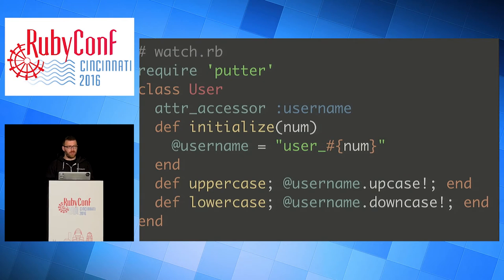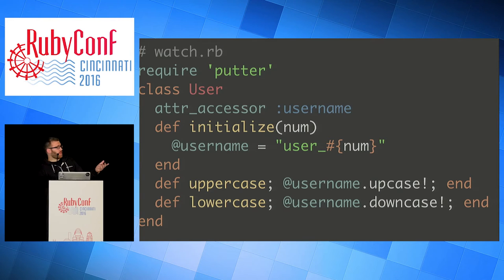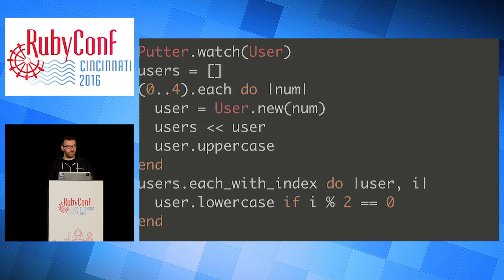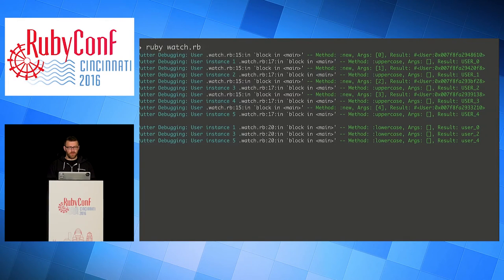This is a little script that uses Putter. We have a user class, we're going to make the username read-writable, initialize with a number, and the username is going to be user underscore whatever that number is. We define two methods — wrappers around the built-in Ruby ones, uppercase and lowercase. After that, we call Putter.watch — there are two APIs, watch and follow — we'll have a users array, create five users (0 to 4), push each into our array, call uppercase on that user, then go through all the even-indexed users and call lowercase. I use semicolons instead of new lines so the code can be bigger on screen.